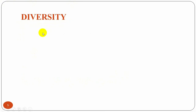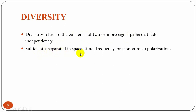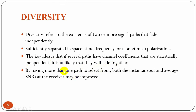Now we are going to discuss about diversity. Diversity refers to the existence of two or more signal paths that fade independently by sufficiently separating in space, time, frequency, or polarization. If several paths have channel coefficients that are statistically independent, they won't fade together, so we can use the best channel which has both high instantaneous signal-to-noise ratio and average signal-to-noise ratio.